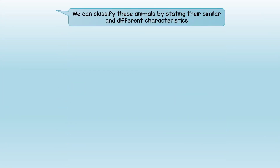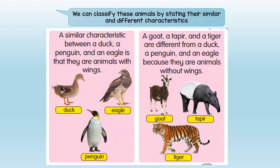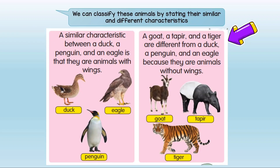Now we can classify these animals by stating their similar and different characteristics. A similar characteristic: a duck, a penguin, and an eagle all have wings. However, a dog, a tapir, and a tiger are different because they are animals without wings.